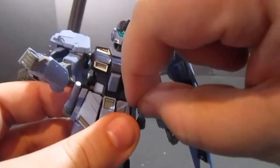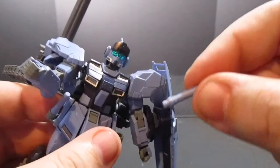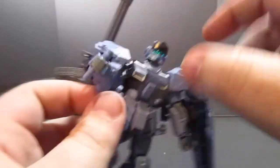We're going to also take a look at the beam saber handles. They just store on the hip skirts right there and pop right into the hand. It's a little loose but it's going to hold it no matter what.